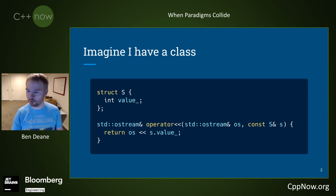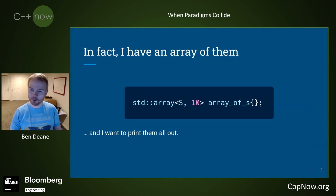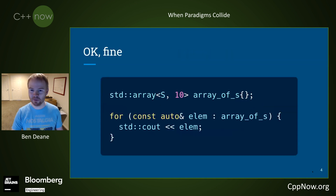Nothing wrong with this — this is exactly what you'd expect. In fact, let's say you have an array of them and you want to print them all out. No problem: we'll just write a range-for and there they are, printed out.